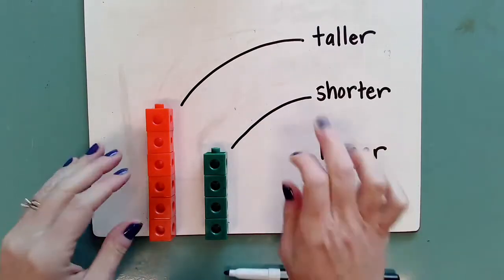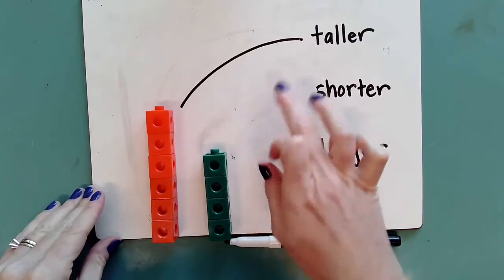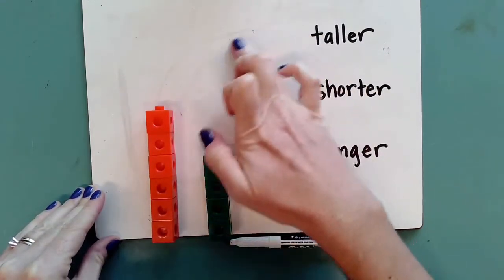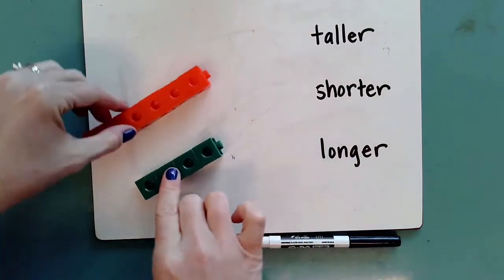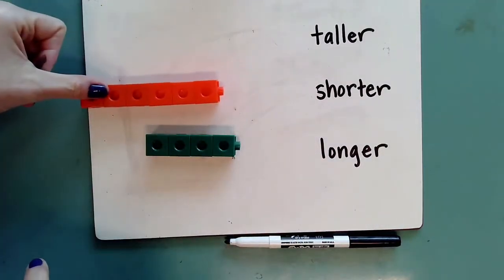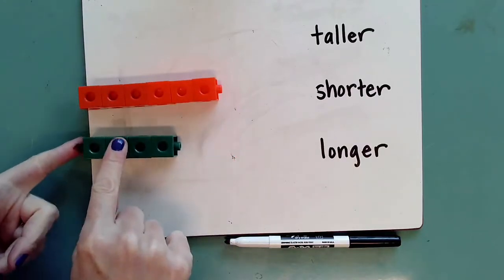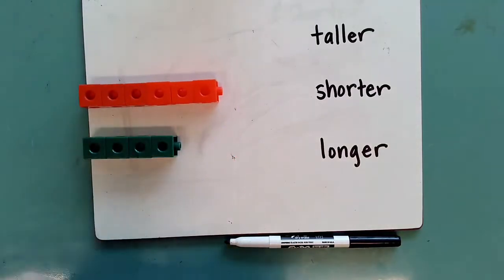So let's go ahead and turn these towers here on our side. And this time we're going to determine which one is longer or shorter. I'm going to turn them here and line them up with the edge of my board again, so I know that they're both starting at the same point.